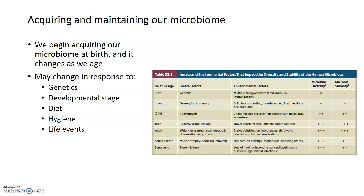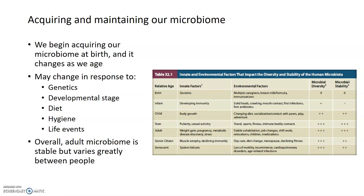Our microbiomes can change as we age through several different factors — both innate factors like genetics and developmental stage, as well as environmental factors like diet, hygiene, use of cosmetic products, and life events such as travel, stress, early illnesses, where we live, how socialized we are with other people, and how much contact we have with animals. From birth to adulthood, microbial diversity and stability both increase, as shown in the graph on the right. At adulthood we've peaked in both diversity and stability, and that tends to stay pretty much the same for the rest of adulthood, with a slight decrease in stability in older people.